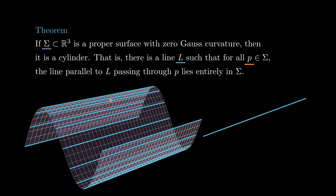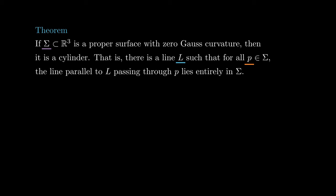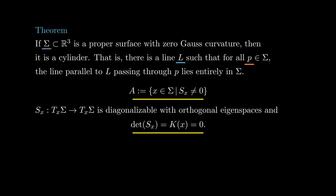More general results have been obtained, for example by Hartmann-Nierenberg and Massey. I'll leave the references in the description. For this proof, we will denote by A the set of points where the shape operator doesn't vanish. Remember that the shape operator at each point is diagonalizable with orthogonal eigenspaces, and since the Gauss curvature is zero everywhere, at each point at least one eigenvalue of the shape operator is zero.